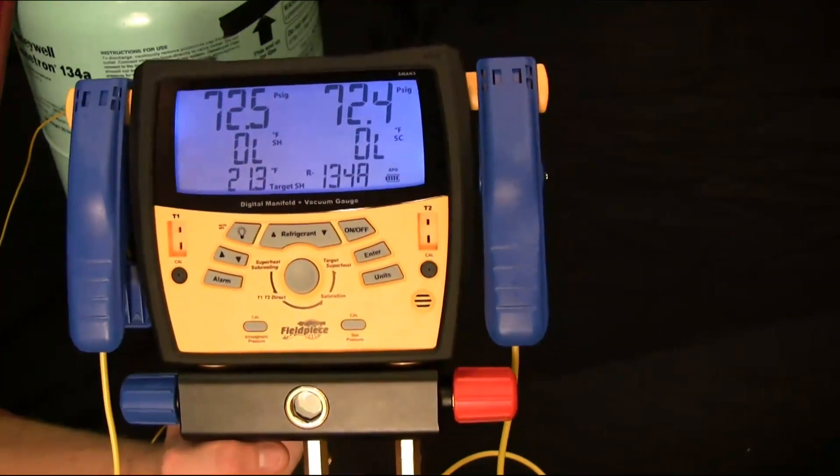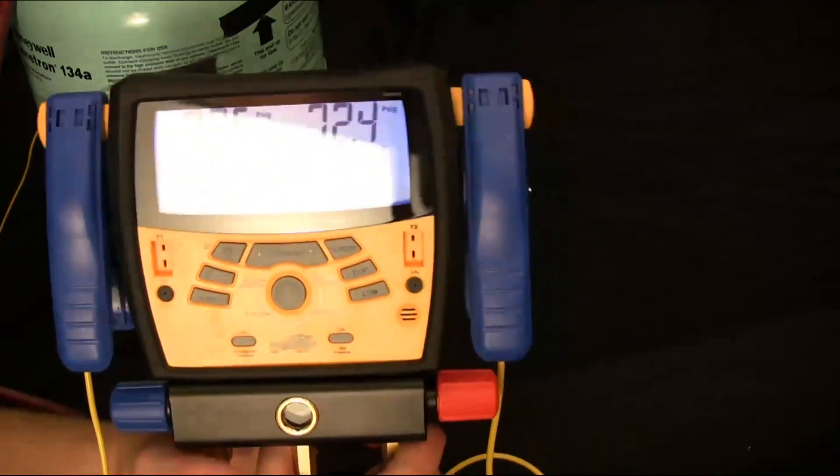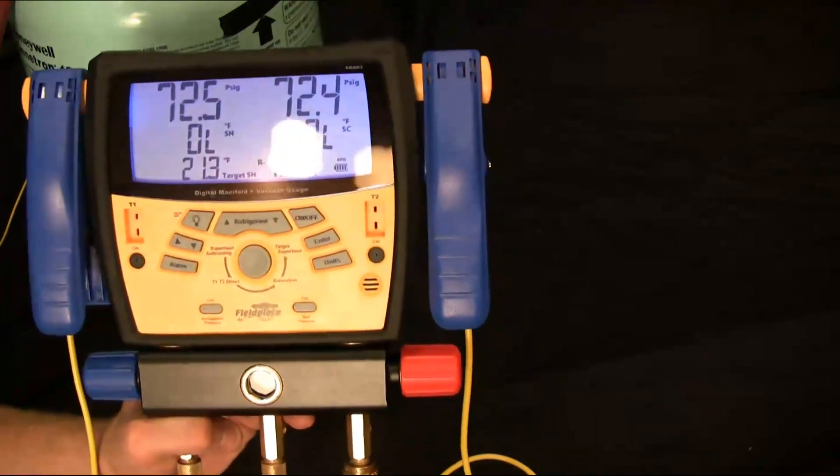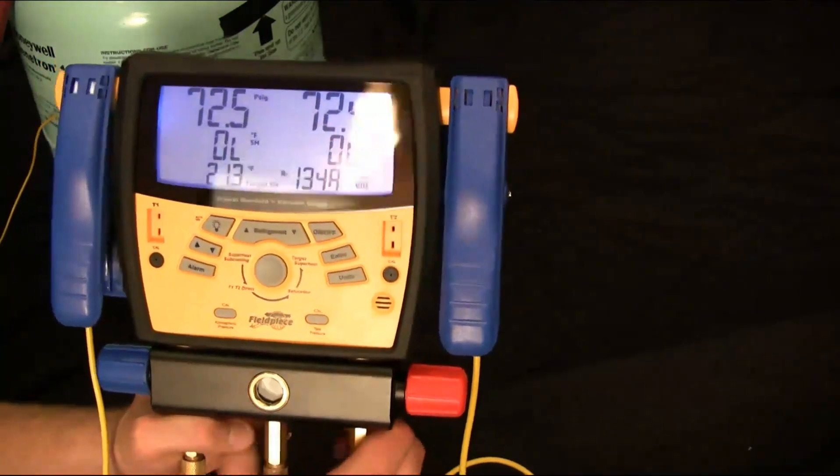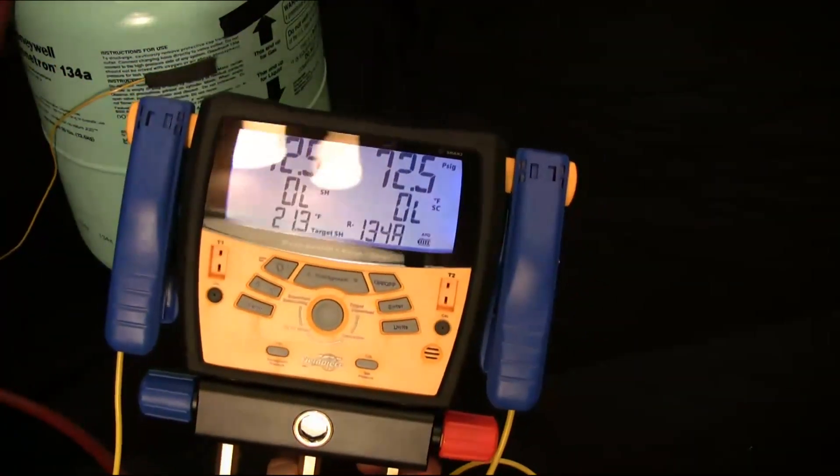Now if you're on TXV systems or things like that, you just use your subcooling and not mess with the target superheat. All right. So that's that part of it. Let's close up the bottle and remove my hose.